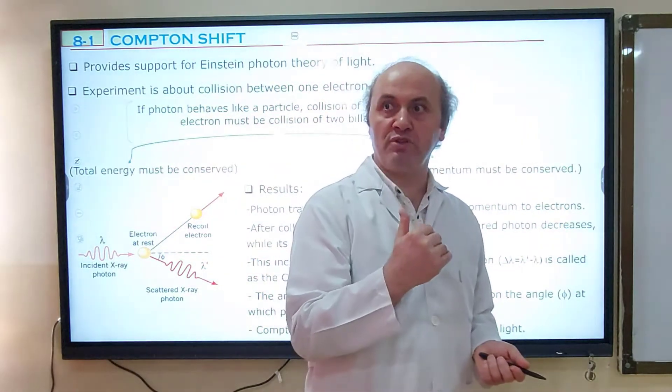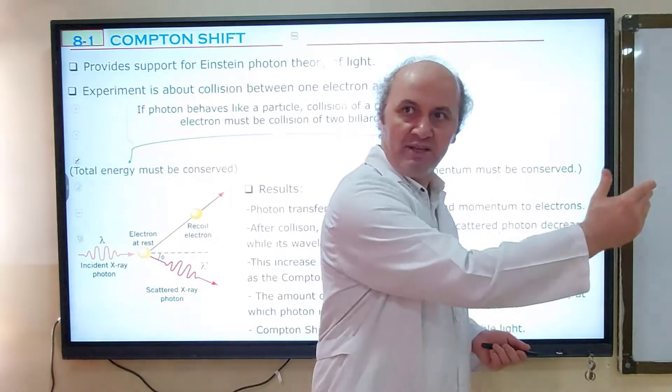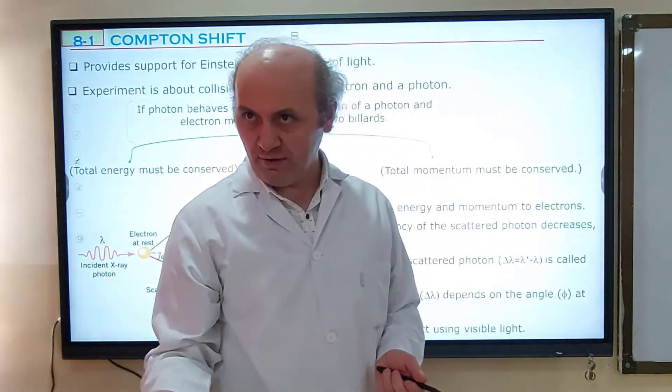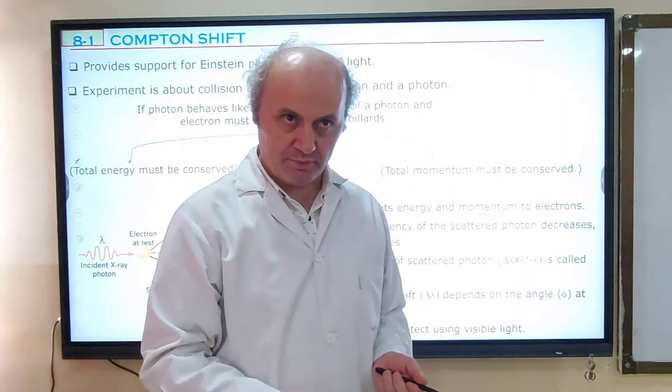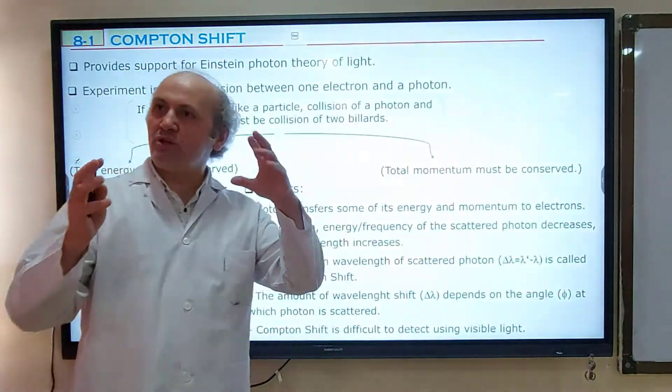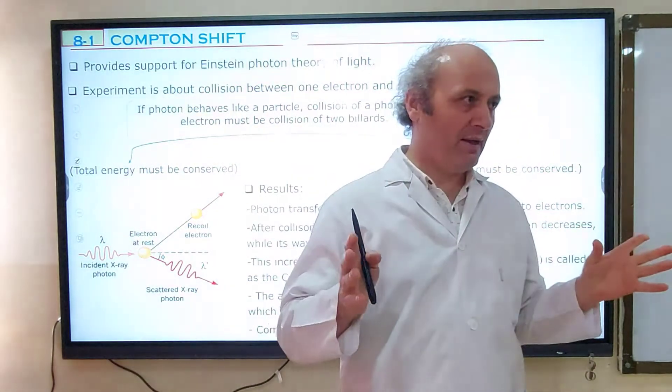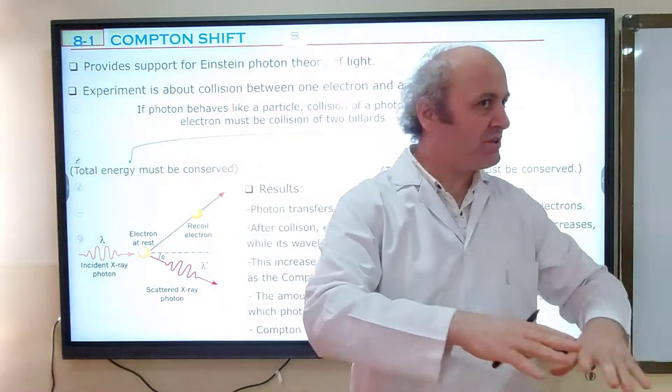But if the energy of the photon is greater than work function, free plus some kinetic energy will be given to the electron, which is called photoelectron. This is about collision of an electron and a photon, but this time electron is free, not on the surface of a photosensitive surface.